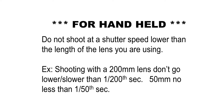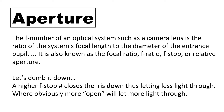For handheld shooting, do not shoot at a shutter speed lower than the length of the lens you're using. For example, if you're shooting with a 200mm lens, do not shoot slower than 1/200th of a second handheld. Of course there are ways around that using a tripod, monopod, or if your lens has image stabilization. This is a general rule of thumb. If you shoot with an 85mm or 50mm lens, don't shoot handheld slower than 1/50th of a second, otherwise you risk introducing motion blur or softness into your image.